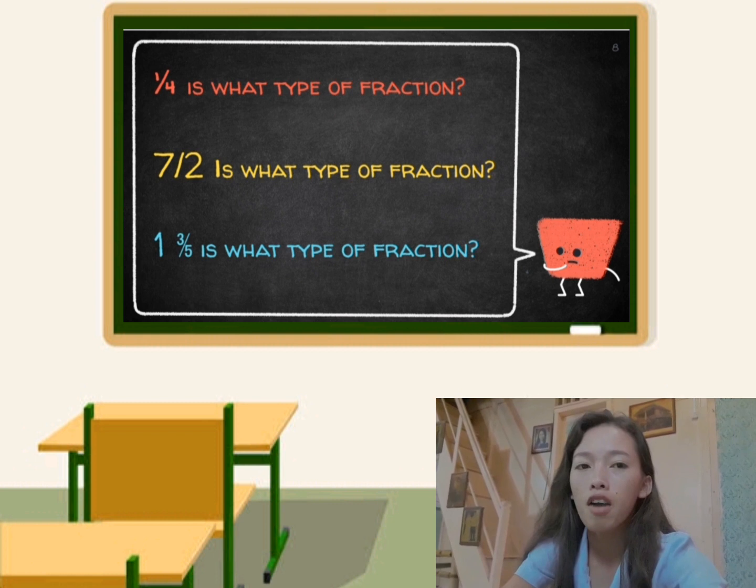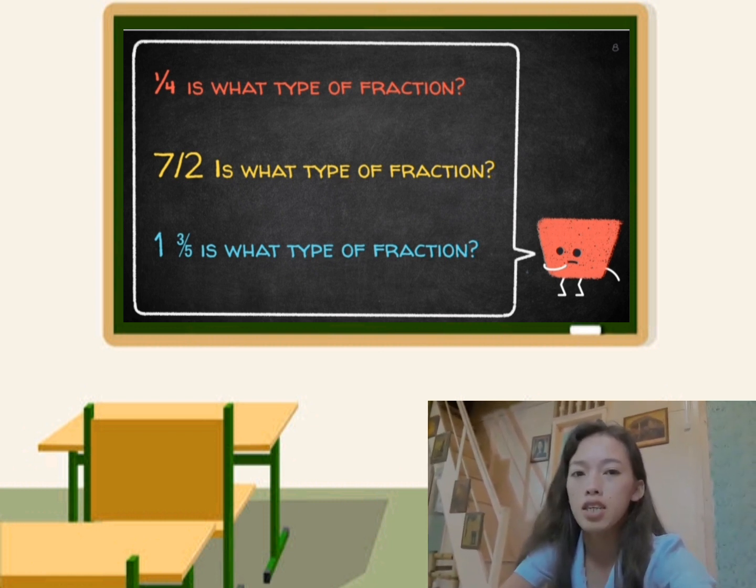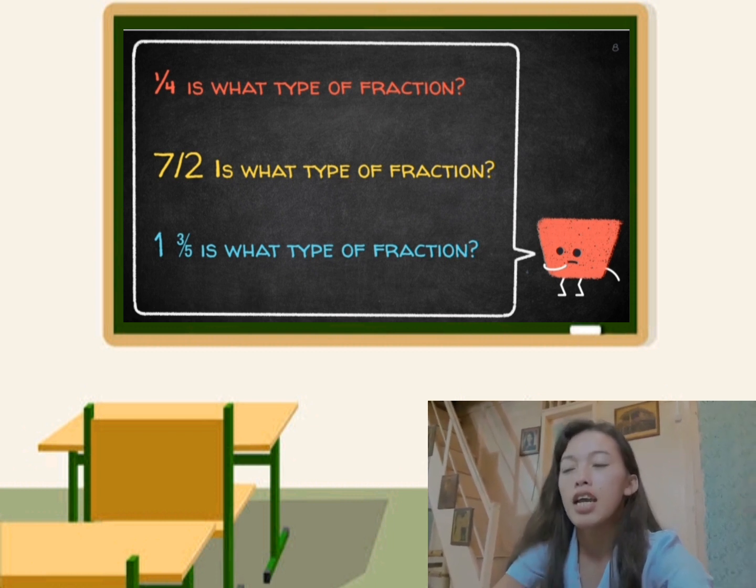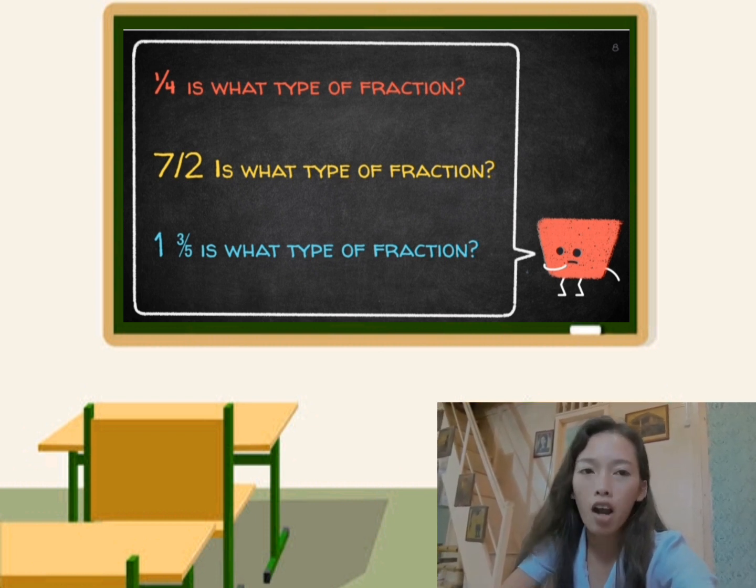Next, 7 halves is what type of fraction? Very good, 7 halves is an improper fraction. Next, 1 and 3/5 is what type of fraction?